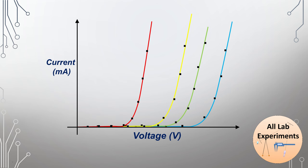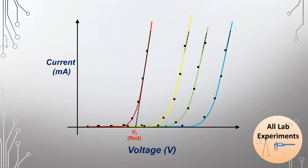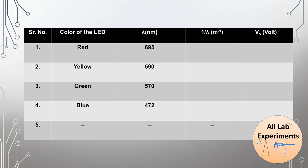After that, we will extrapolate the increasing current portion of the red LED, and the point where it cuts the voltage axis is called the startup voltage for the red LED. We will do the same for the yellow, green, and blue LEDs. Then we make a table.